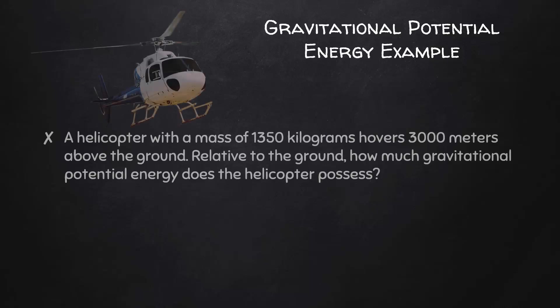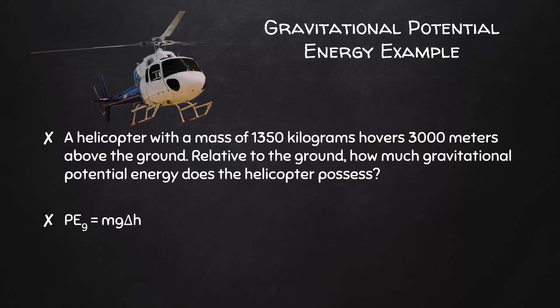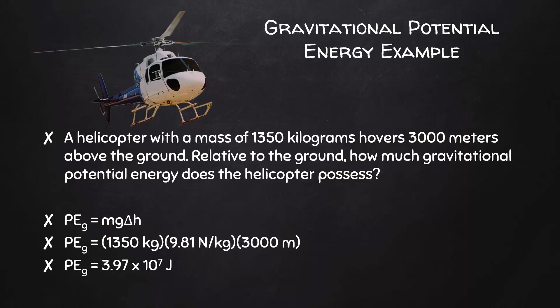Now for a gravitational potential energy example. A helicopter with a mass of 1,350 kilograms hovers 300 meters above the ground. Relative to the ground, how much gravitational potential energy does the helicopter possess? The equation for gravitational potential energy is mg delta H. Plugging in our known values, the gravitational potential energy of the helicopter is 3.97 × 10⁷ joules.